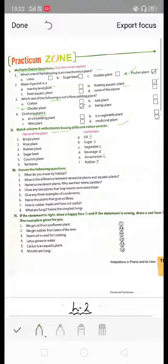Brinjal plant is a vegetable. Next is rose plant which is ornamental. Rubber plant gives rubber. Sugar beet gives sugar. Coconut plant gives us oil and tea leaves give us beverage.